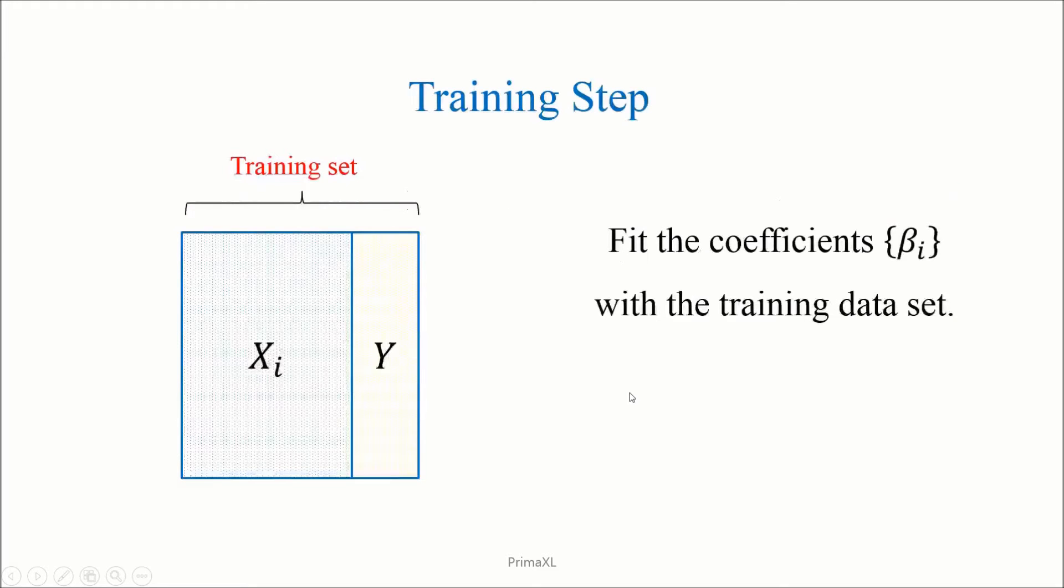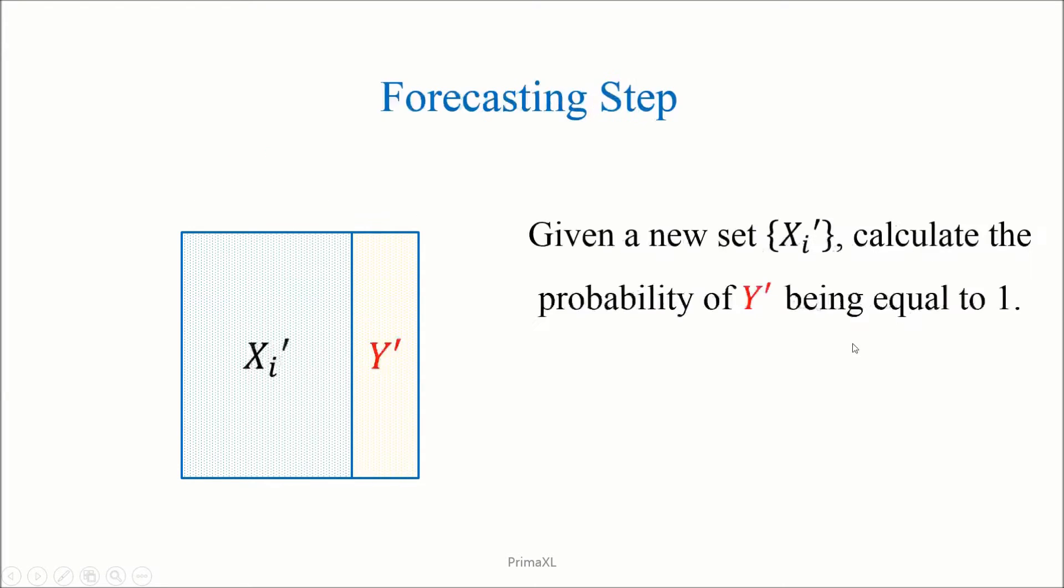When we say train the regression model, we mean fitting the beta coefficients with the training data. Now suppose the situation where new values for the independent variables are given. These new values are denoted as x prime.